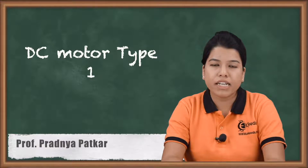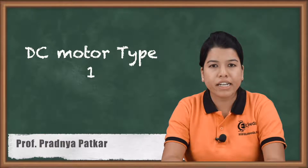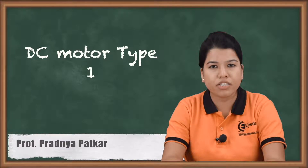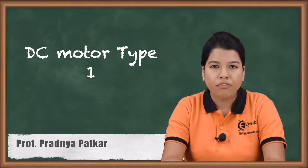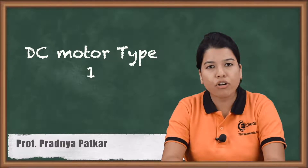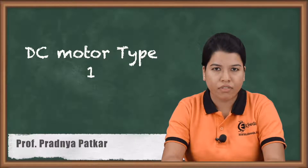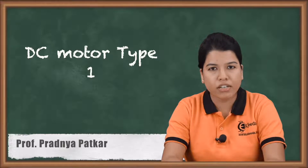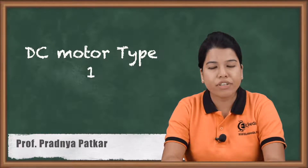DC motor is basically a device which converts electrical energy into mechanical energy. The construction of DC motor is very similar to DC generator. The types of DC motor are mainly decided depending upon the connection of field winding in relation with the armature winding. Considering this, there are three types of DC motor: DC shunt motor, DC series motor, and DC compound motor. In this video, we are going to study DC shunt motor.